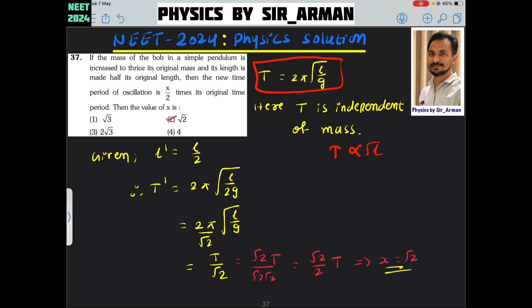Now, what is given? Its length is made half. So t dash is equals to, you can see l by 2, means t dash is proportional to root l by root 2.